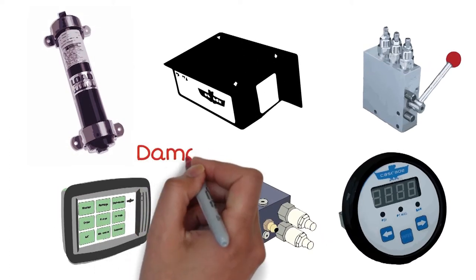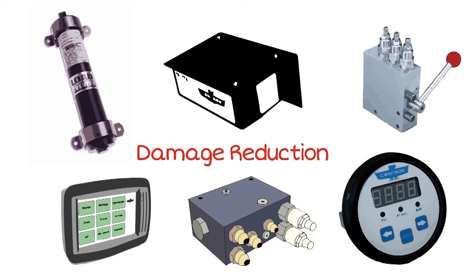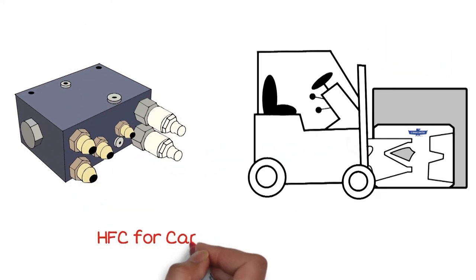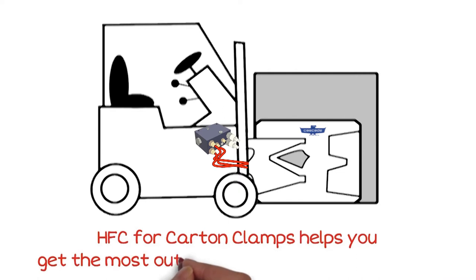Cascade's material handling solutions are supported by a wide range of damage reduction options. HFC for carton clamps is one effective damage reduction accessory that helps you get the most out of your Cascade attachment.